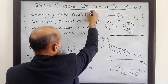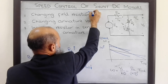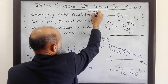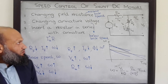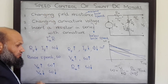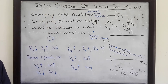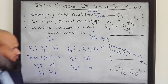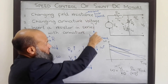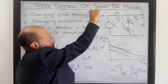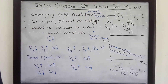In practice, these two approaches are used to complement each other: the armature voltage approach is used to control speed below base speed, and the field resistance approach is used to control speed above base speed.